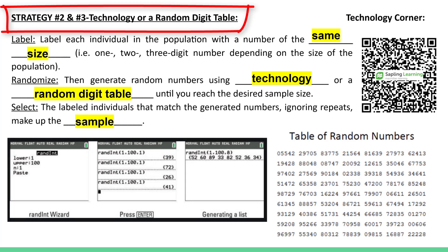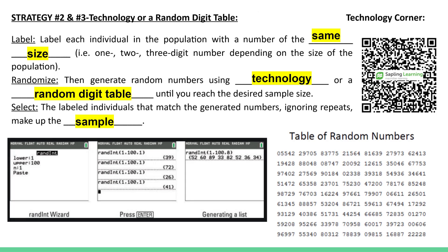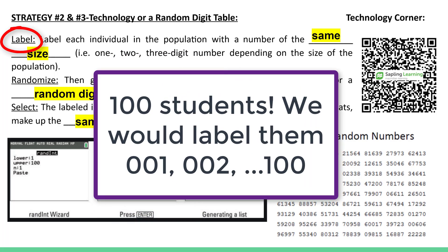Strategies 2 and 3 — 2 being technology, 3 a random digit table — are written up similarly. The big idea is, again, you label, randomize, and select. Here we would label each individual of the population with the same number of digits. For example, if we had 100 students, we would need to use 3 digits to label them, because that last student — student 100 — would be 3 digits. So our first student would be labeled 001, then 002, and so on.